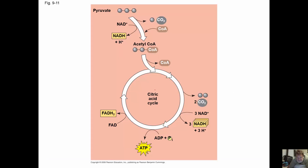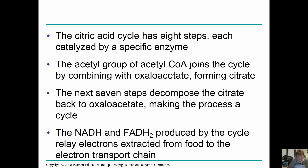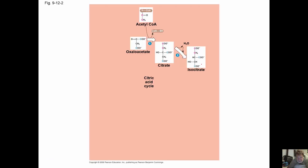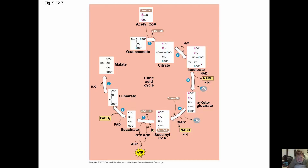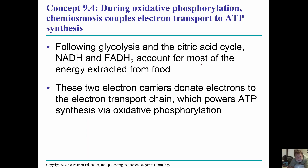The citric acid cycle, also called the Krebs cycle: the two acetyl groups come in, two carbon dioxides leave, three NADHs are made, one ATP is produced via substrate-level phosphorylation, and one FADH2 is produced. This happens twice per glucose molecule because each glucose produces two pyruvates. We'll go over this more in class.